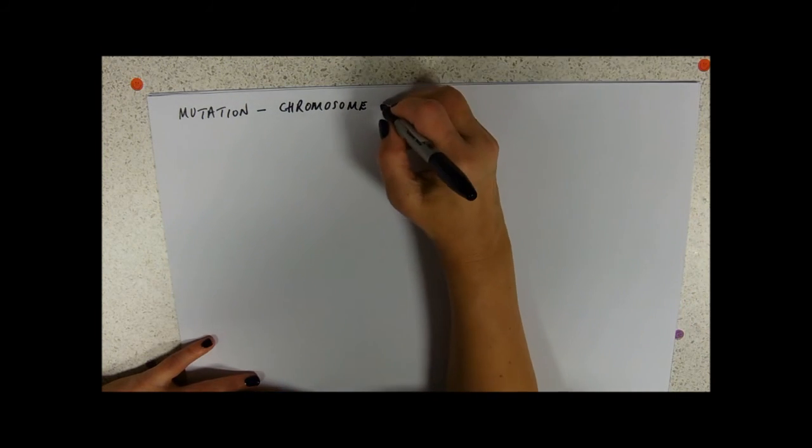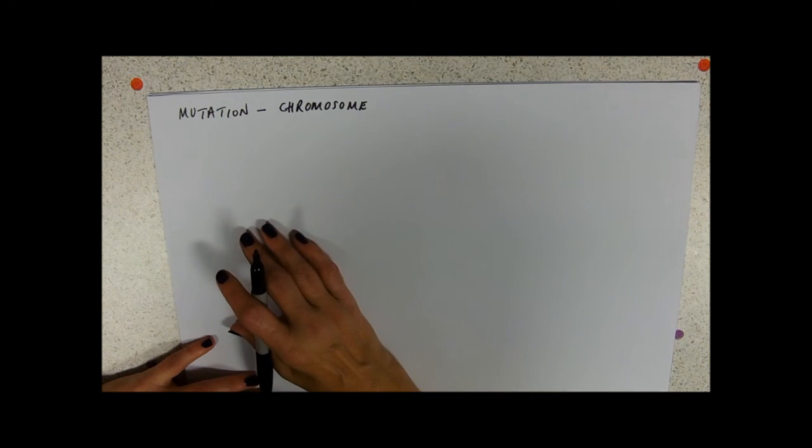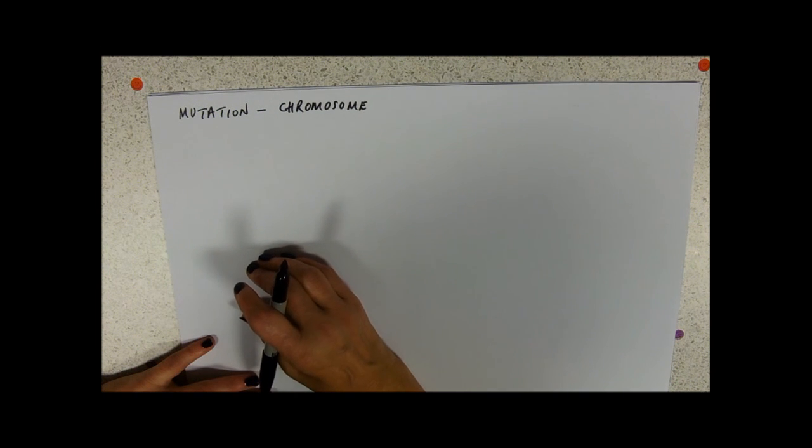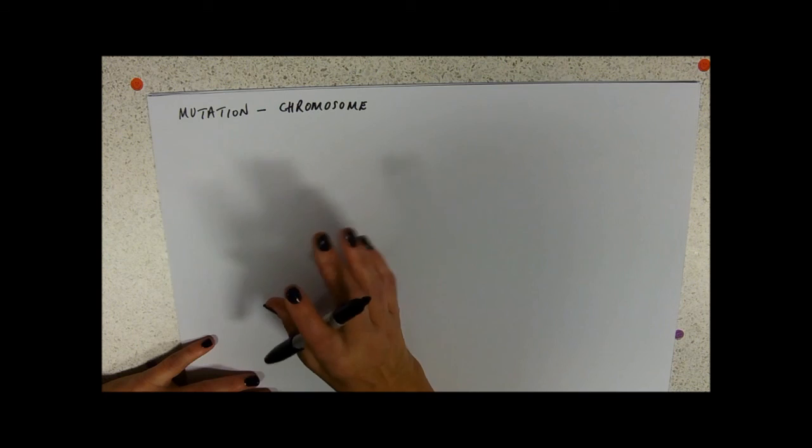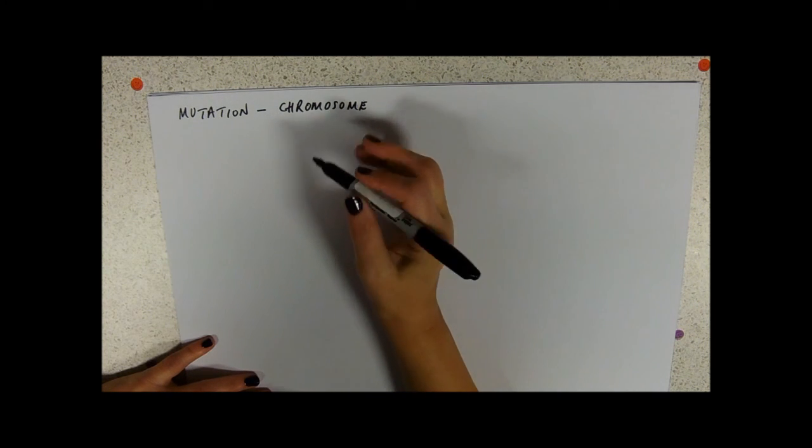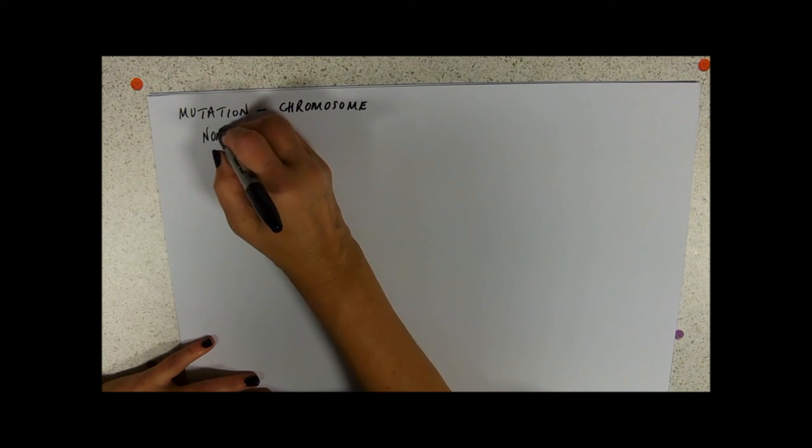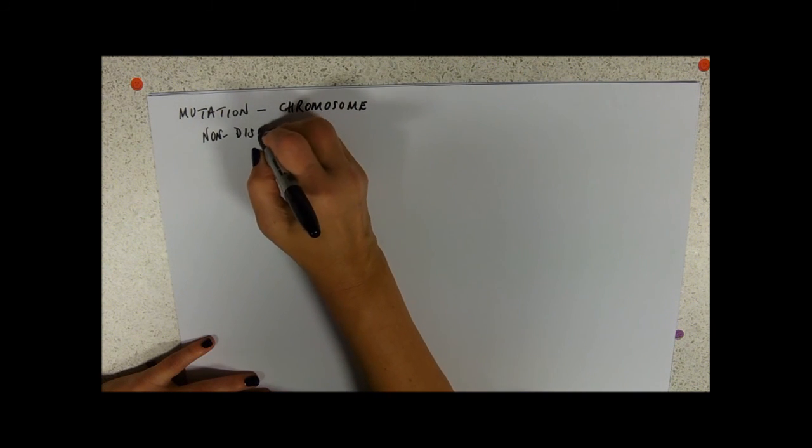Chromosome mutations come in sort of two forms. There's the kind where you break a bit off one chromosome and attach it to another, which isn't on your syllabus so we're not going to deal with that. And there's also this one that's caused by what's called non-disjunction.